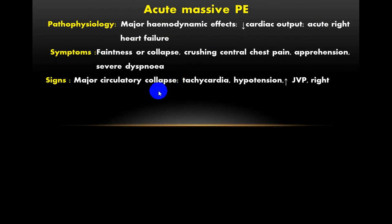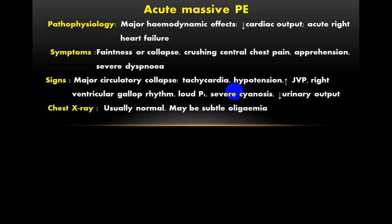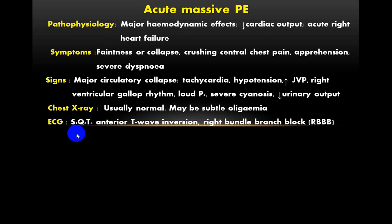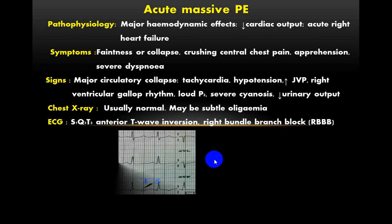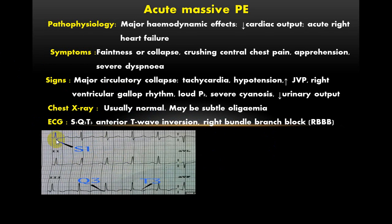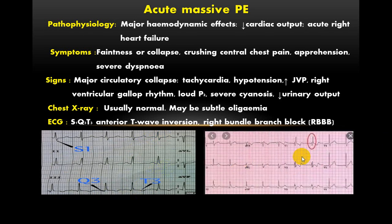Clinical signs of acute massive pulmonary embolism include major circulatory collapse with tachycardia, hypotension, raised JVP, right ventricular gallop rhythm, loud second heart sound especially the P2 pulmonary component, severe cyanosis, and decreased urinary output. Chest examination may be normal or show subtle findings. ECG findings include the S1Q3T3 pattern, anterior T-wave inversion, and right bundle branch block, with deep S in V1 and tall R in V1.